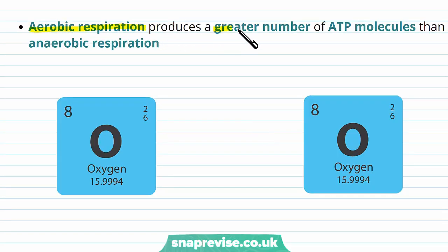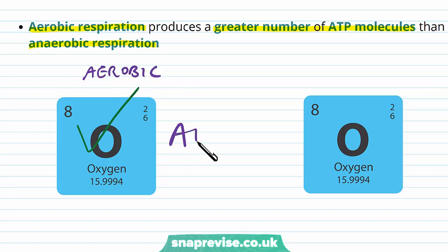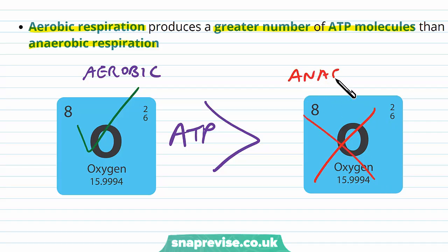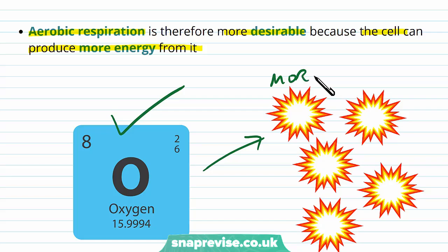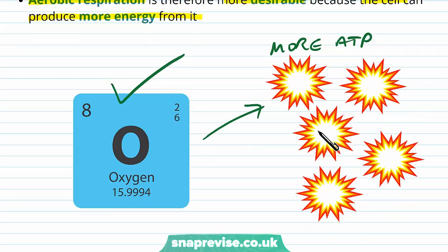Aerobic respiration produces a much greater number of ATP molecules than anaerobic. So if oxygen is present, the processes that happen in aerobic respiration produce more ATP than if oxygen is absent and we have anaerobic respiration. This means aerobic respiration is more desirable because the cell can produce more energy, and oxygen being present is favourable because we make more ATP, which means we have more energy to do things.